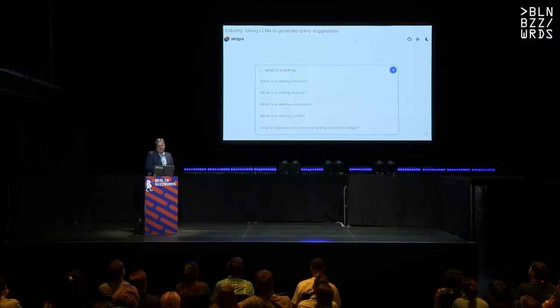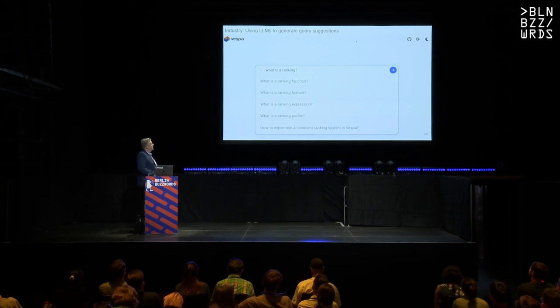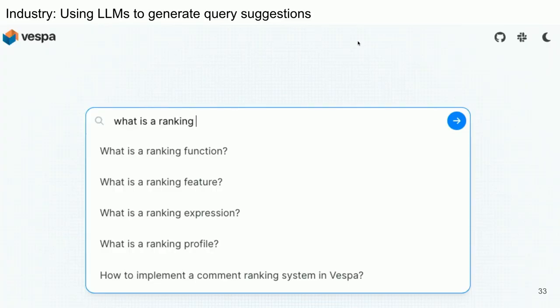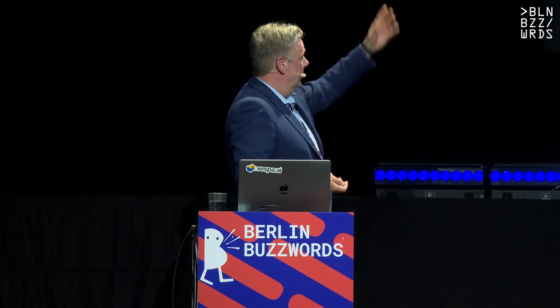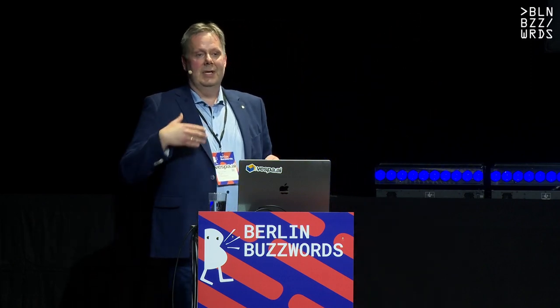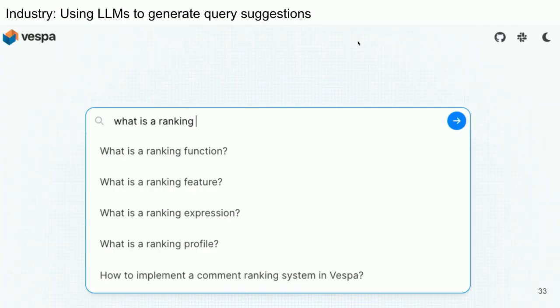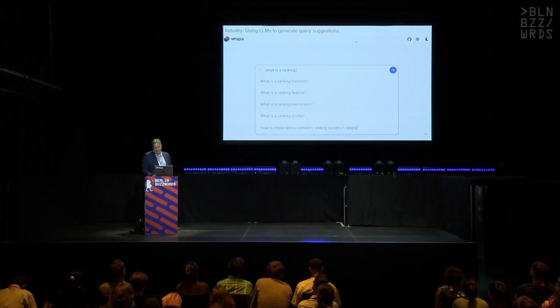At Vespa, we found we can also use large language models to generate query suggestions. We took all the content on Vespa, asked the large language model to generate questions for each document, then put that into autosuggest mode in Vespa. When you're trying to search for something, it suggests these generated queries. All suggestions are generated by the generative model offline, put into a Vespa index, and served at query time — so no latency cost for the LLM at serving time.